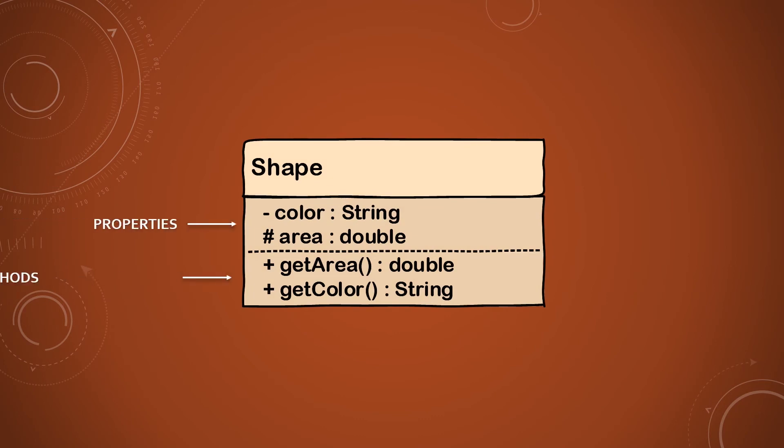Object-oriented programming combines a group of related variables and functions into a unit. We call that unit an object. An object consists of states, actions, and identity. We refer to these states as attributes or properties and the actions as methods. For example, think of a shape — a shape is an object with properties such as color and area, and methods like get area and get color.